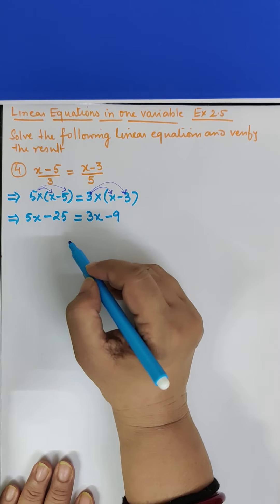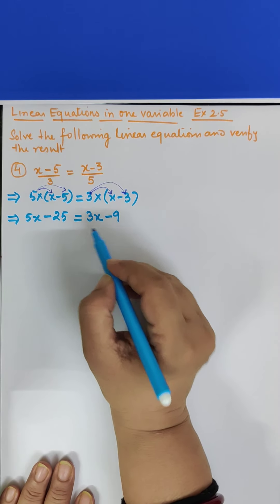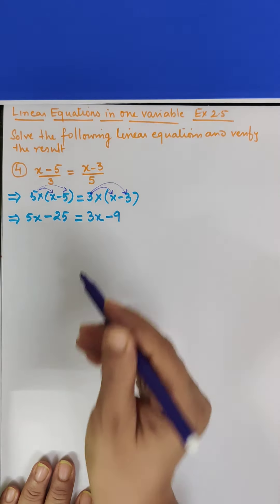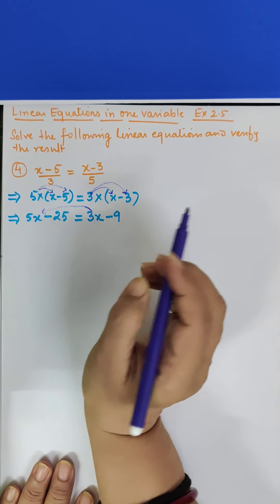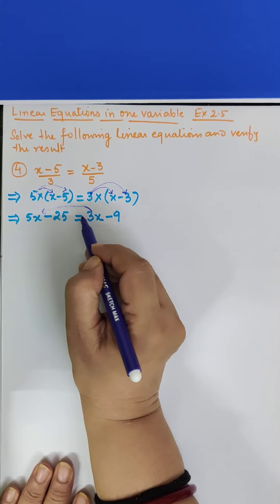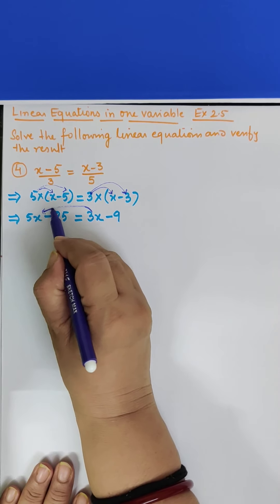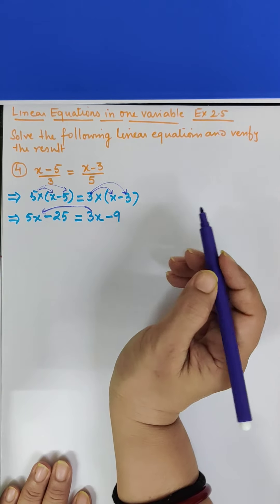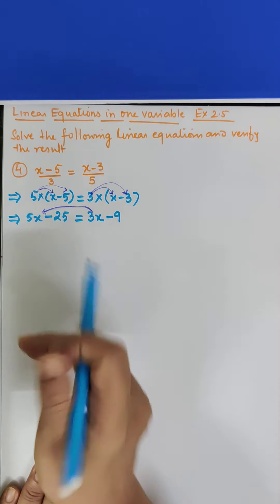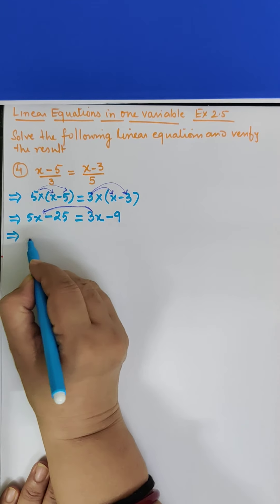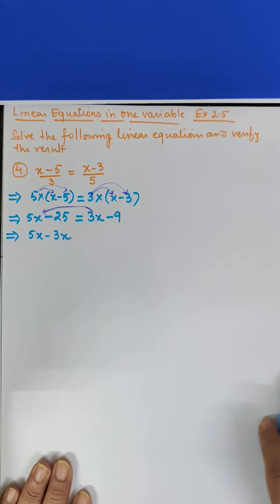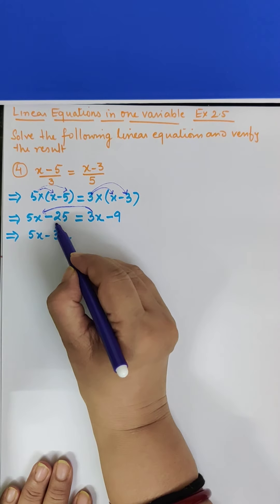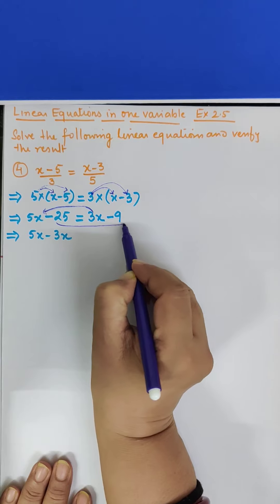Now this is equal to x-3 is equal to x-3. Now this is equal to x-3 by the method of transposition. Now this is equal to x-3 as it is. Now this is equal to 5-23. Now this is equal to x-4 by the method. So we will cross the left to right.